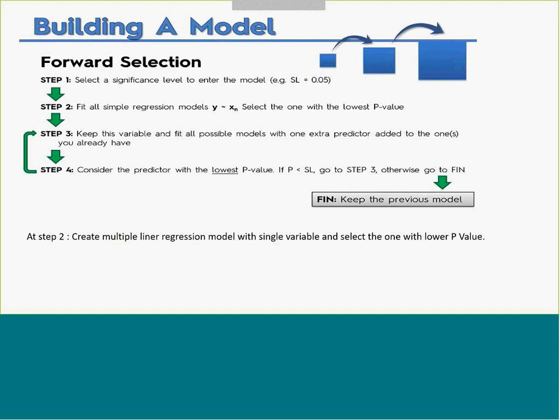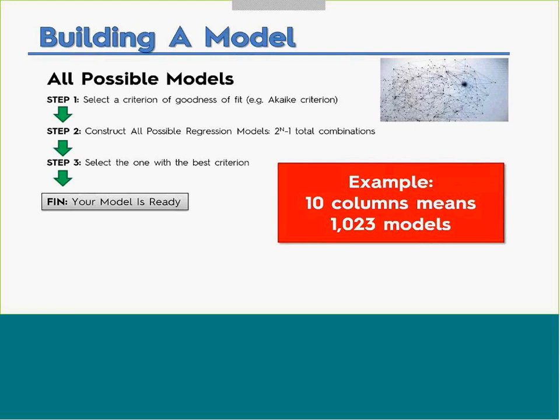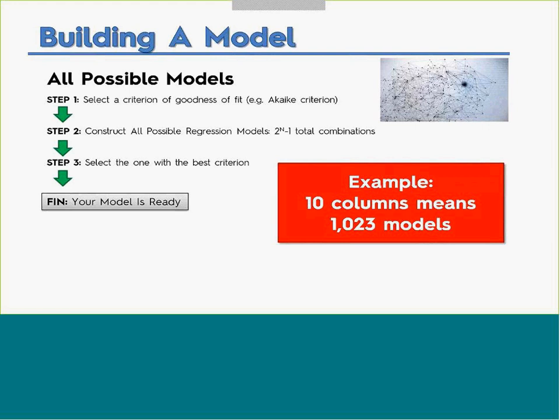In forward selection — the reverse of backward — you start with one variable and keep adding more, checking the model fit against the 5% significance level. If a variable doesn't meet it, remove it; if it does, keep it. Bidirectional elimination is highly unlikely in practice. The all-possible-models approach is also highly unlikely — with ten columns, you would need to build 1,023 models.